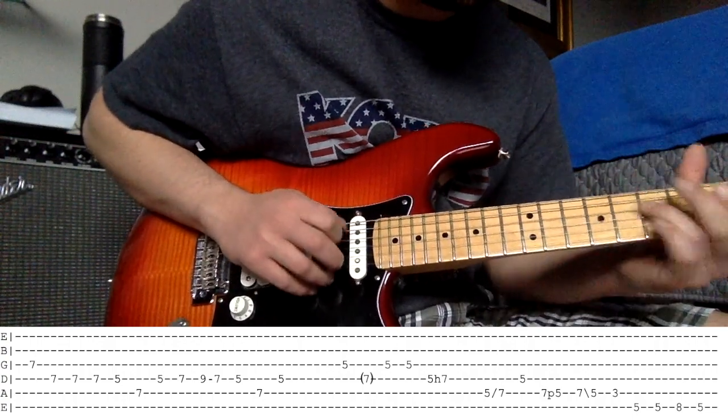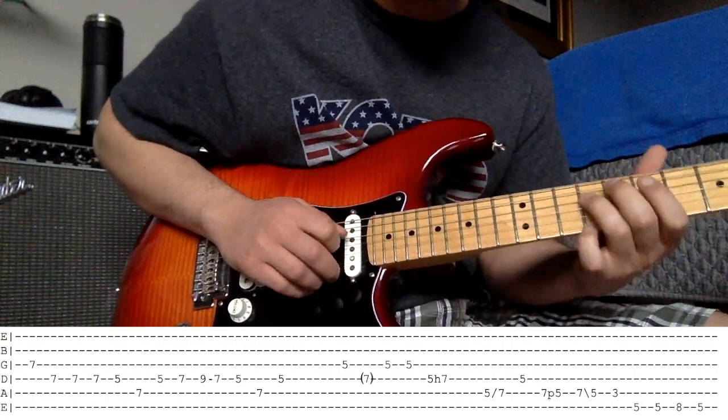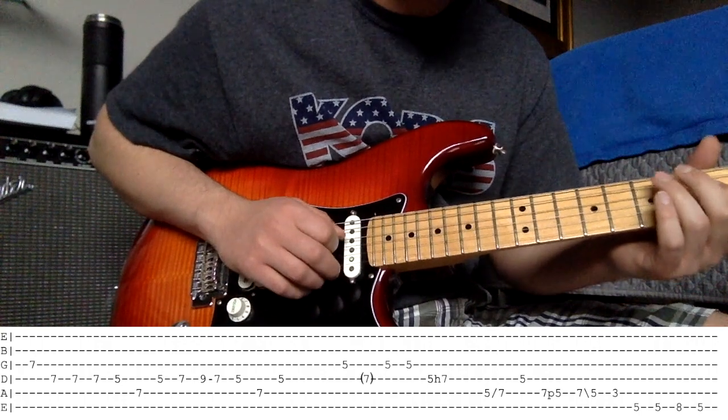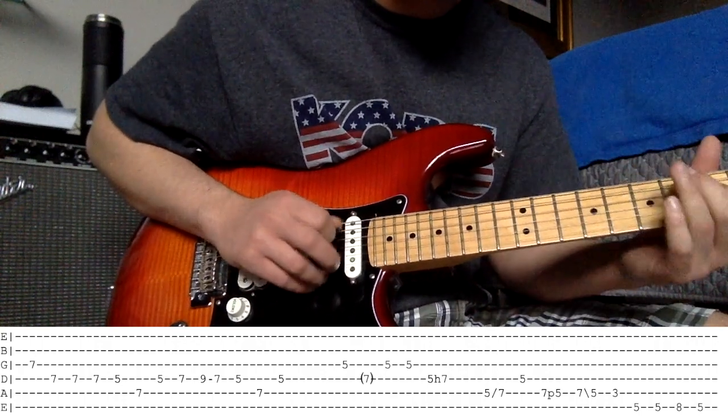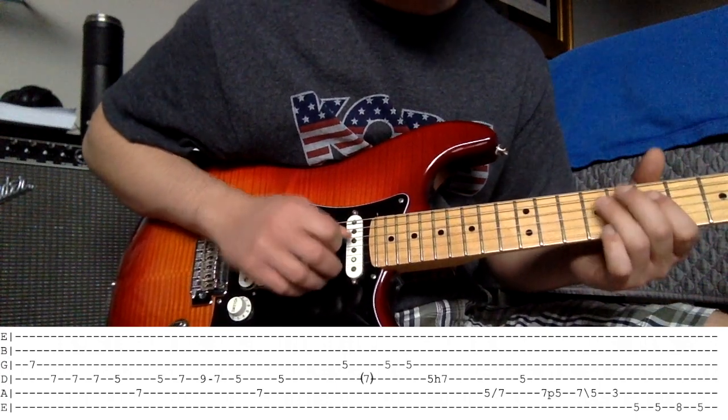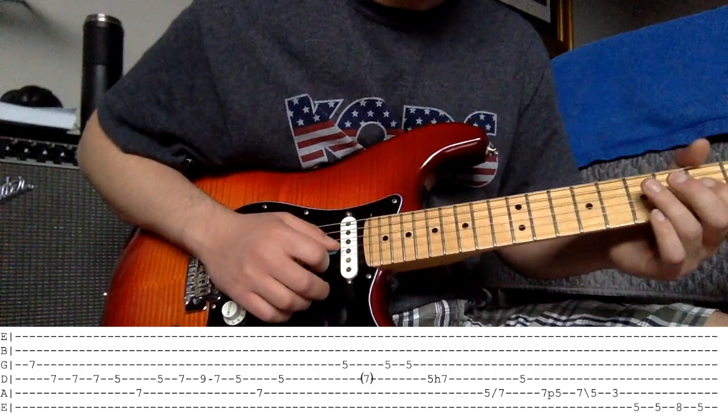Then he goes 5, 7 on the D, then 9, 7 on the D, then 7 on the A, 5 on the D. So, 5, 7, 9, 7, 5, 7 on the A, 5. Cool.